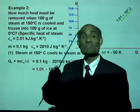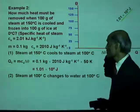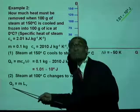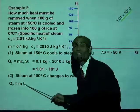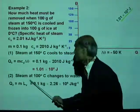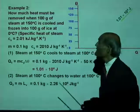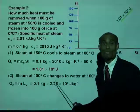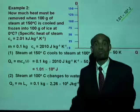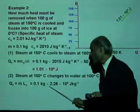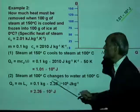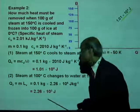Steam at 100 degrees Celsius changes to water at the same temperature — a change of state. The amount of heat liberated is mass times latent heat of vaporization, with no change in temperature. Mass is 0.1 kilogram, latent heat of vaporization of water is 2.26 times 10 to the 6 joules per kilogram, giving Q2 equals 2.26 times 10 to the 5 joules.